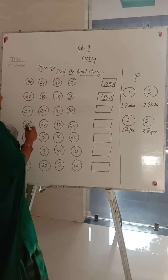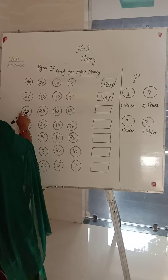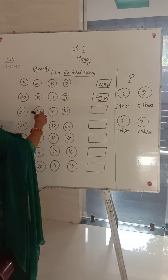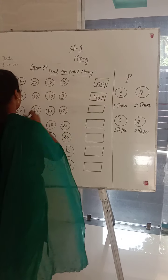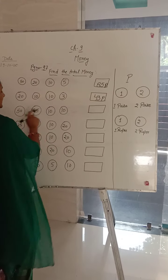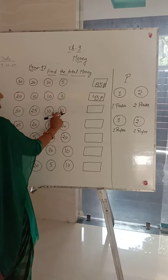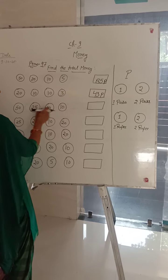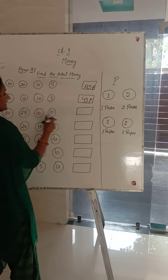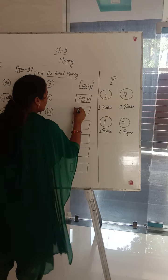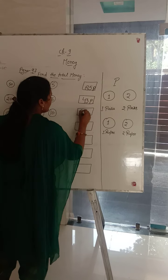Next is 50, 25, 10 and 10. Total gaya hain: 50, 60, 70, 80, 90 and 95 paisa.